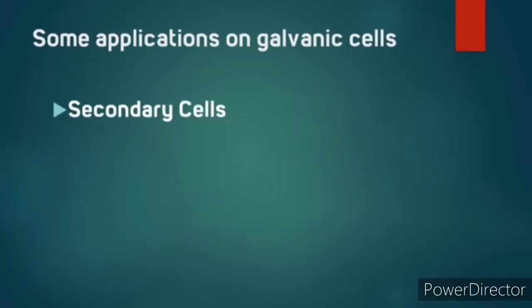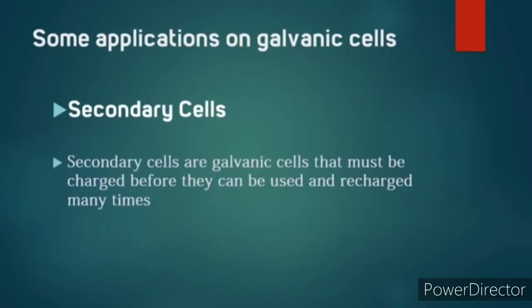Secondary cells are galvanic cells that must be recharged before they can be used. They also can be recharged many times. In the charging process, the spontaneous feasible reaction that produces electrical energy is reversed. In other words, the charging process needs outside source EMF to occur.